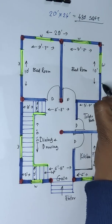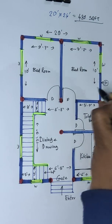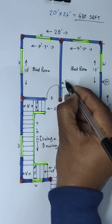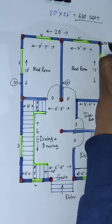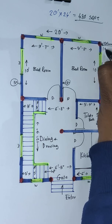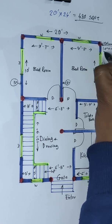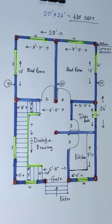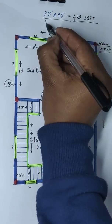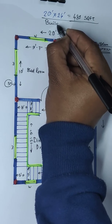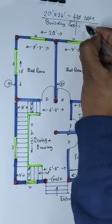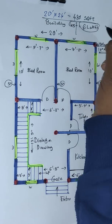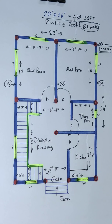Outside wall: 5-inch wall. Inside wall: 5-inch wall. Outside wall: 5-inch wall. Column: 10 inch into 12 inch column. Building cost: 6 lakhs only for village area. Take care till the next video.